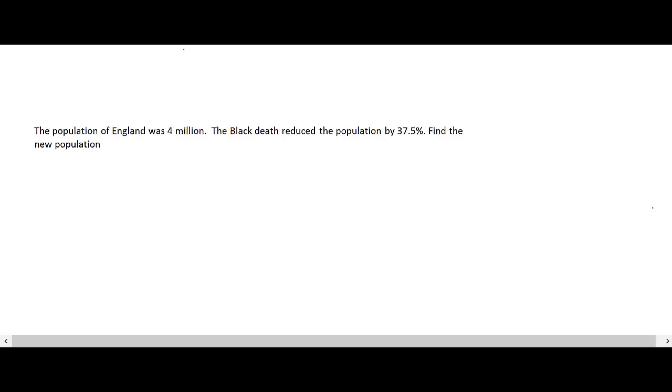So, the population of England was 4 million, the Black Death reduced the population by 37.5%, and what we need to do is find the new population. Now, again, if I was to draw a line representing how many people we had, so let's say this is 0, and let's say this is 100%.